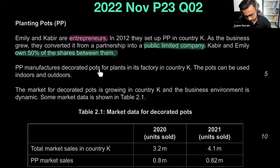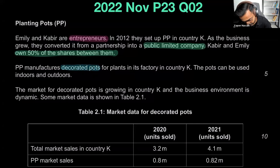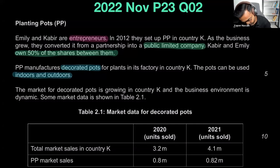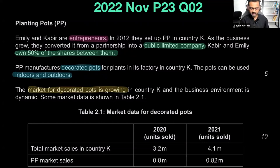PP manufactures decorated pots for plants in its factory in Country K. The pots can be used indoors and outdoors. As soon as you see the type of product being sold, make a note — it usually helps with marketing and understanding costs. The market for decorated pots is growing in Country K, and the business environment is dynamic, meaning there are changes in PEST factors — economic, social, environmental, technical.